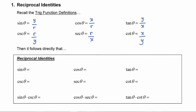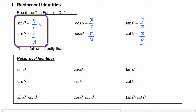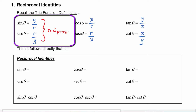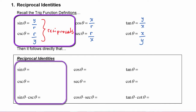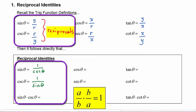Now we notice something about these definitions — we see that y over r and r over y are just reciprocals of each other. So it follows that sine of theta is going to be equal to one over the cosecant of theta, because they are reciprocals, and cosecant of theta would then be one over the sine of theta. And we know that when you multiply reciprocals, the result is equal to one.